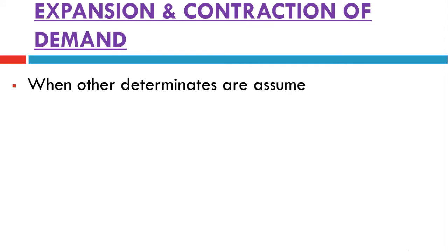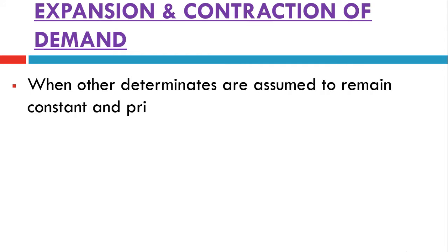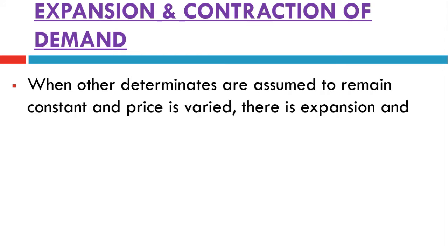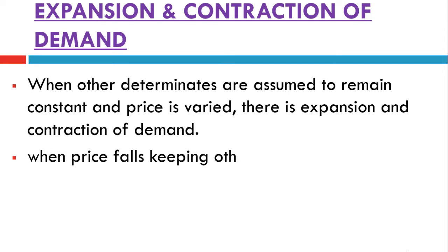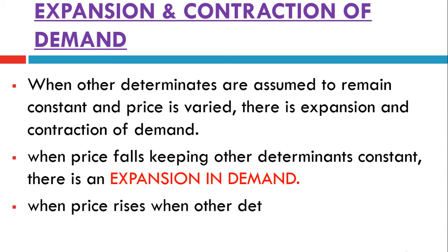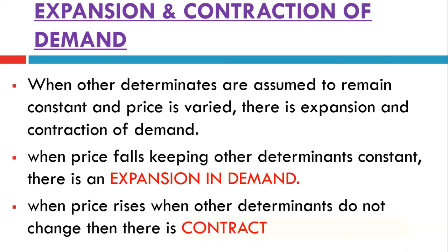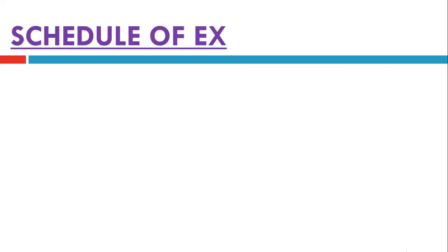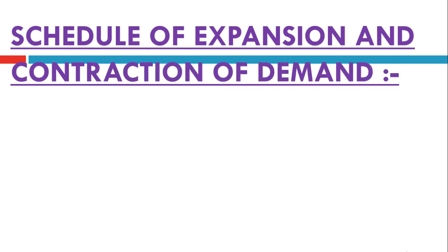When other determinants are assumed to remain constant and prices vary or change, then it is expansion and contraction of demand. The main thing you have to understand is that the price changes — either it increases or decreases. When price falls, keeping other determinants constant, there is an expansion in demand. Exactly opposite is the contraction of demand: when price rises, keeping other determinants constant, there is a contraction of demand.